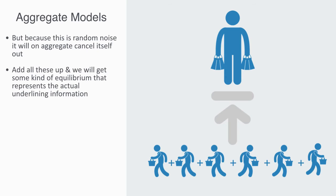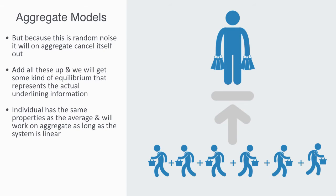If we add all these up, we will get some kind of equilibrium that is a correct representation of the actual underlying information. This is part of the genius behind linear systems theory. It is how we can get very abstract, clean models out of very complicated and noisy data. It works by assuming the individual has the same properties as the average and this will work on aggregate as long as the system is linear.